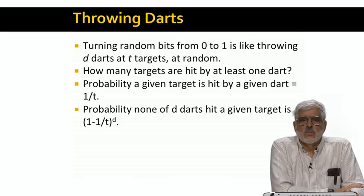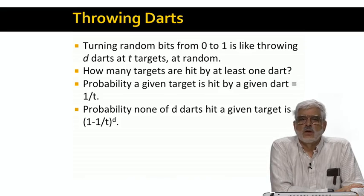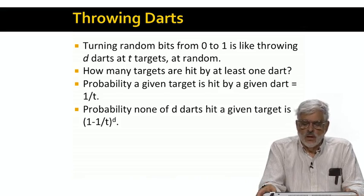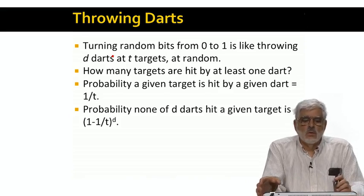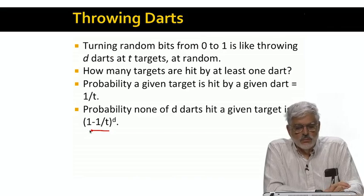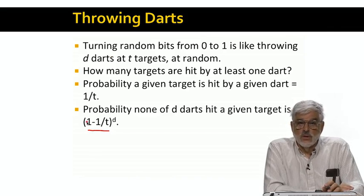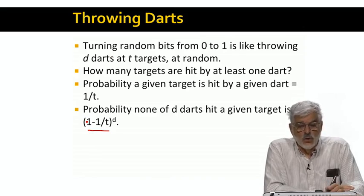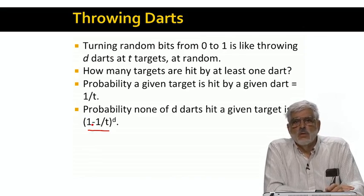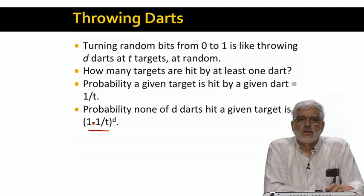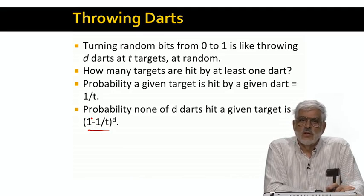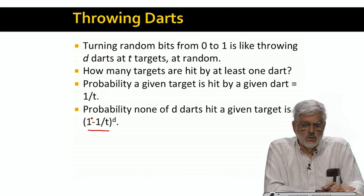And if we throw d darts, the probability that none hit the target, that is, the bit remains 0, is 1 minus 1 over t to the power d. That is, 1 minus 1 over t is the probability one dart does not hit. And when we raise this to the dth power, we get the probability that no dart hits.